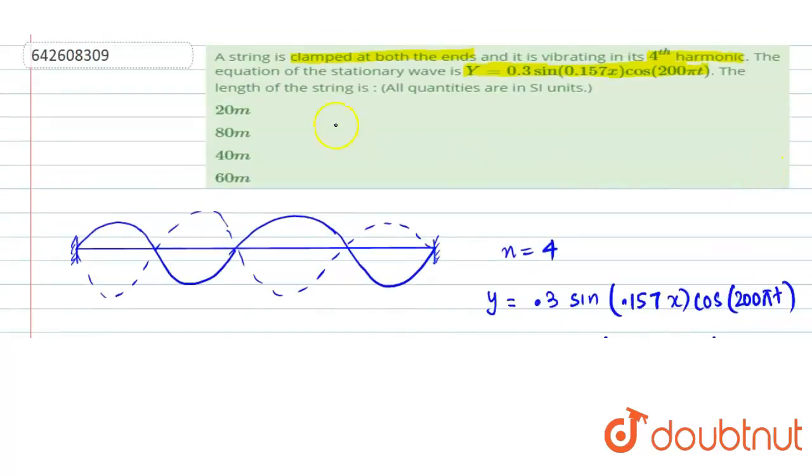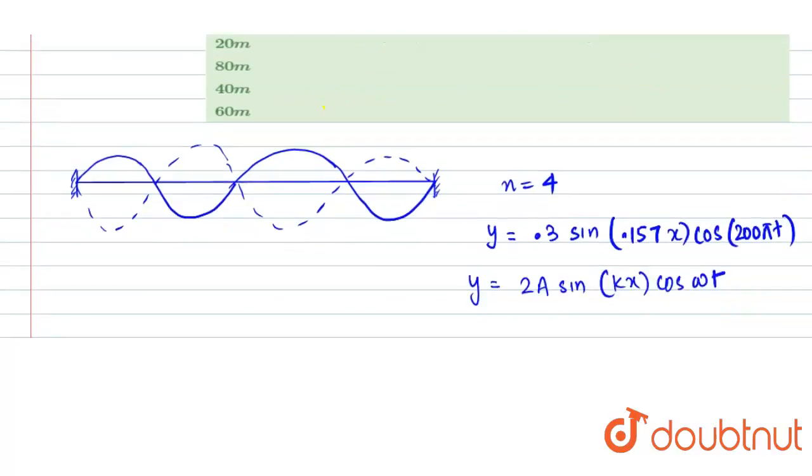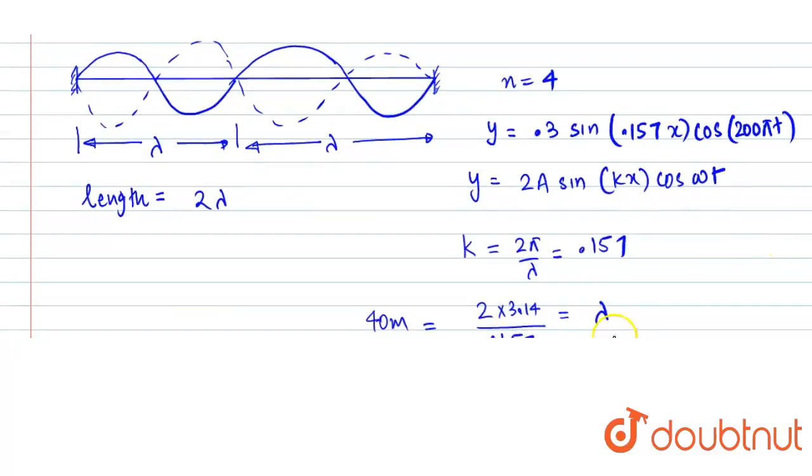Now, as we had to find the total length of the string, we can see how many wavelengths are there. This is what one wavelength is. The total length of the string will be equal to 2λ. And the value of lambda we found it to be 40 meter.